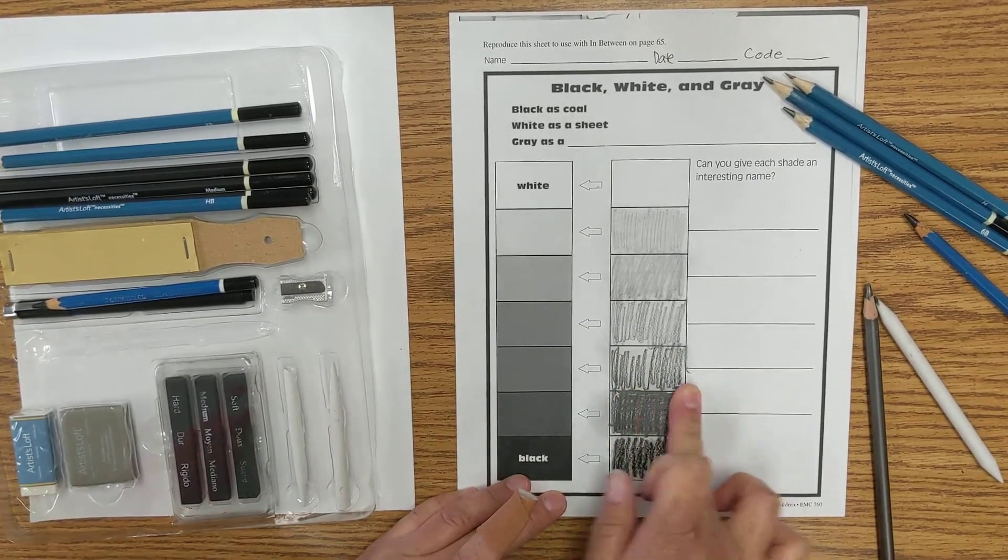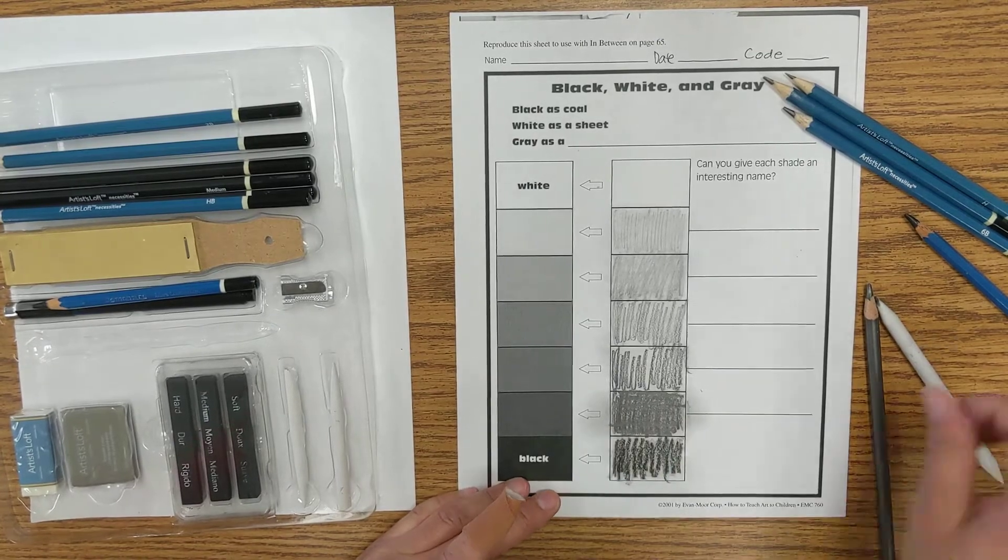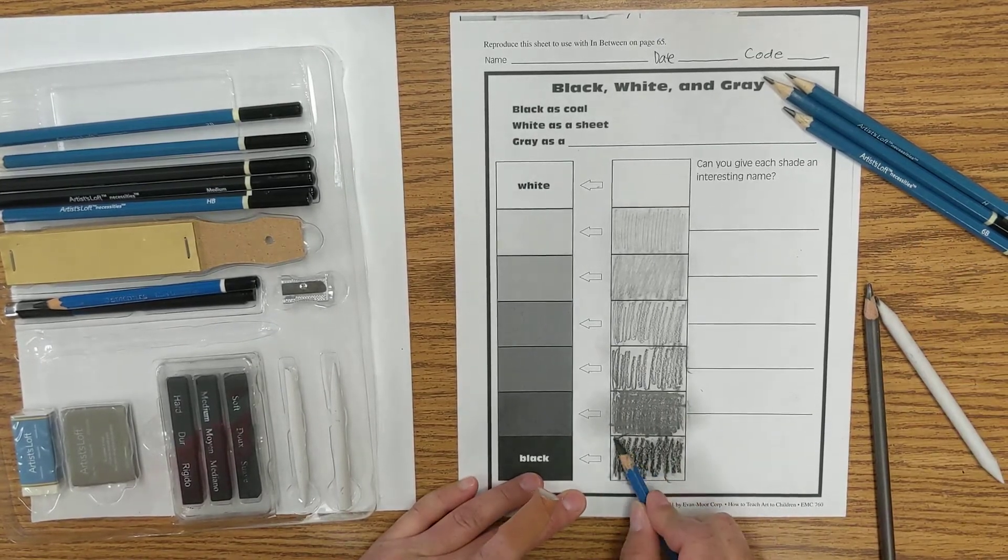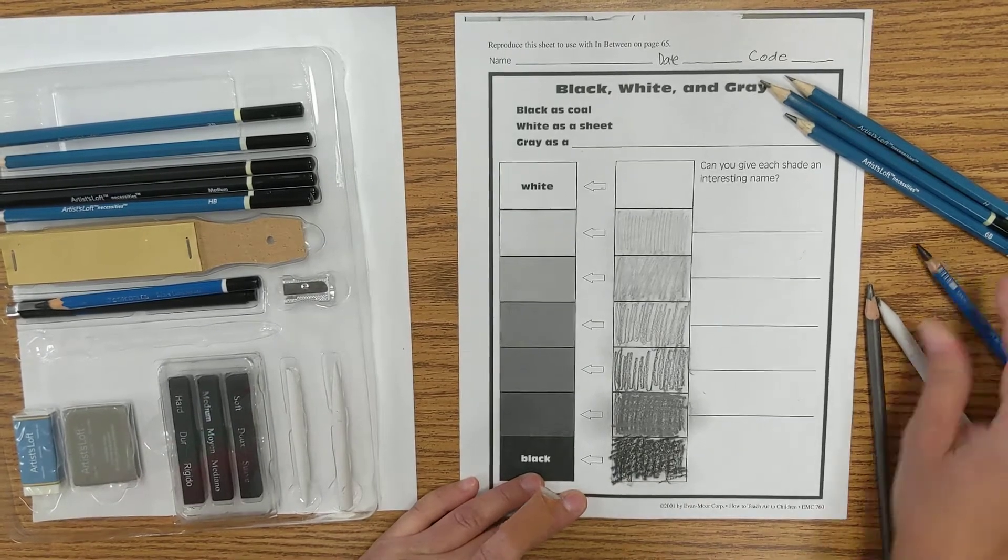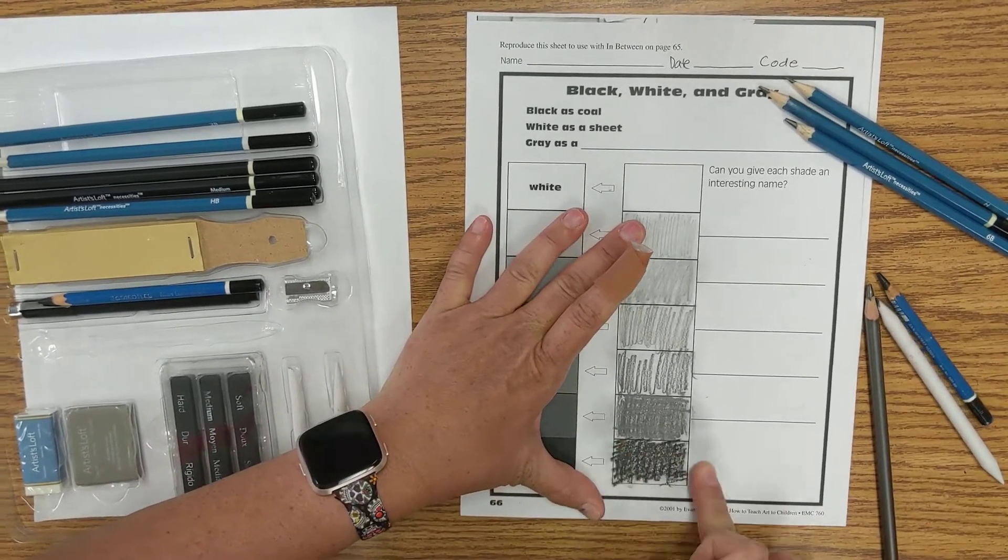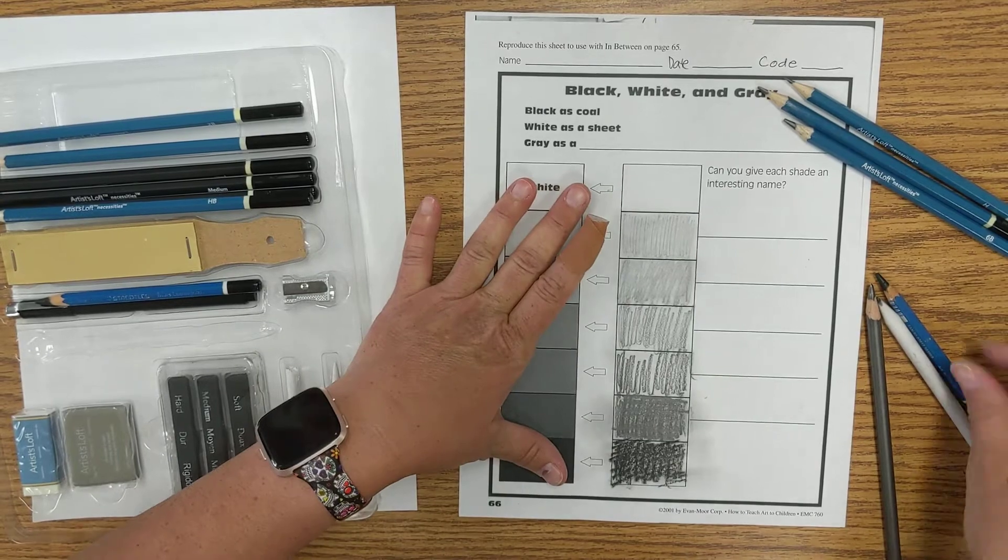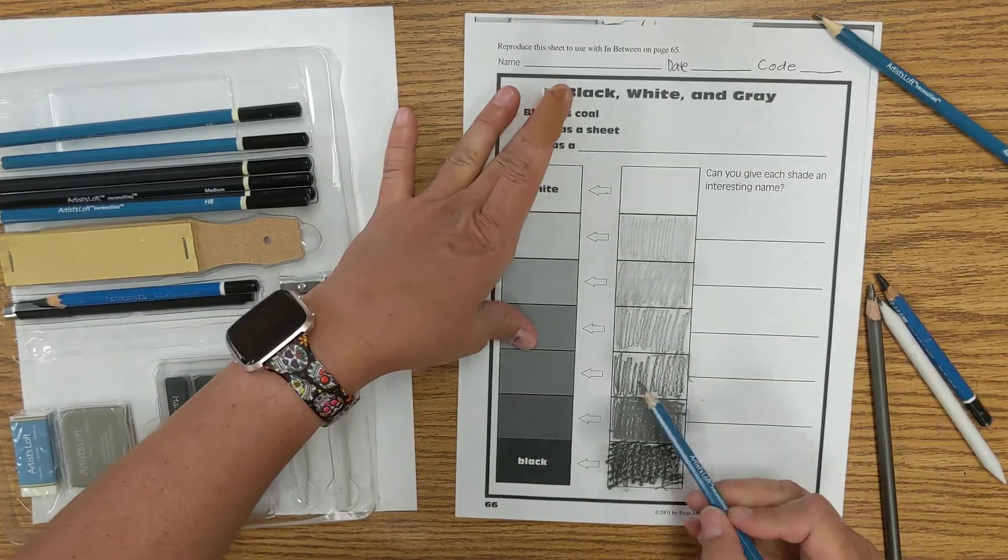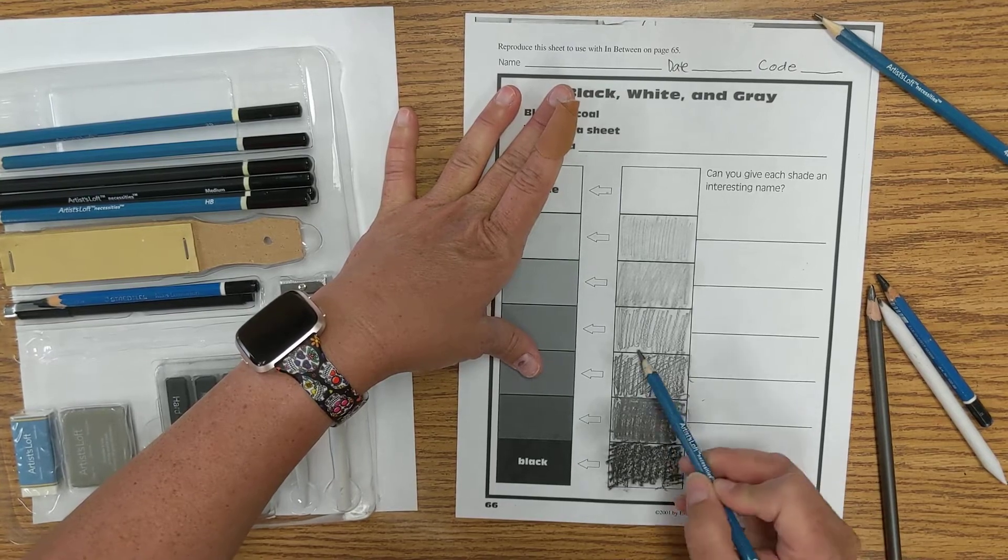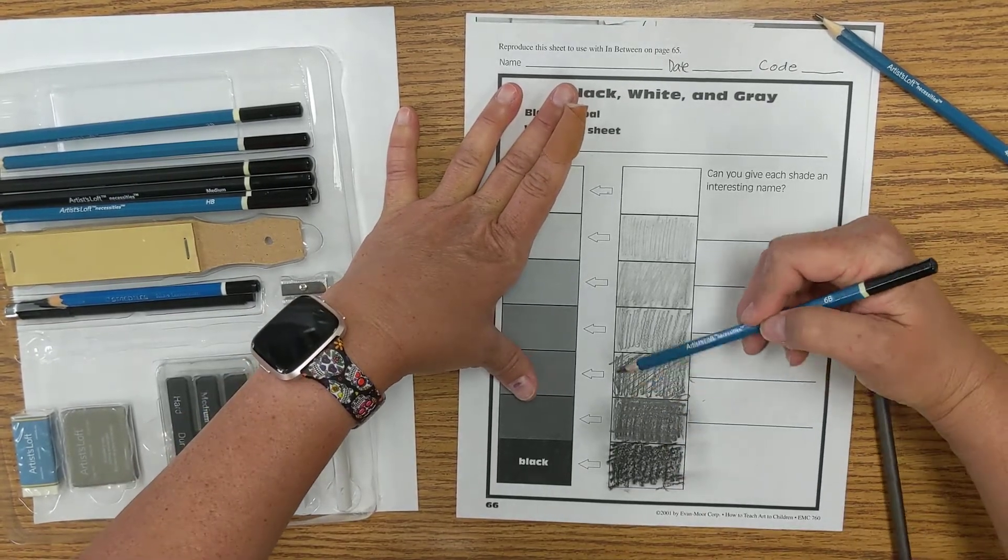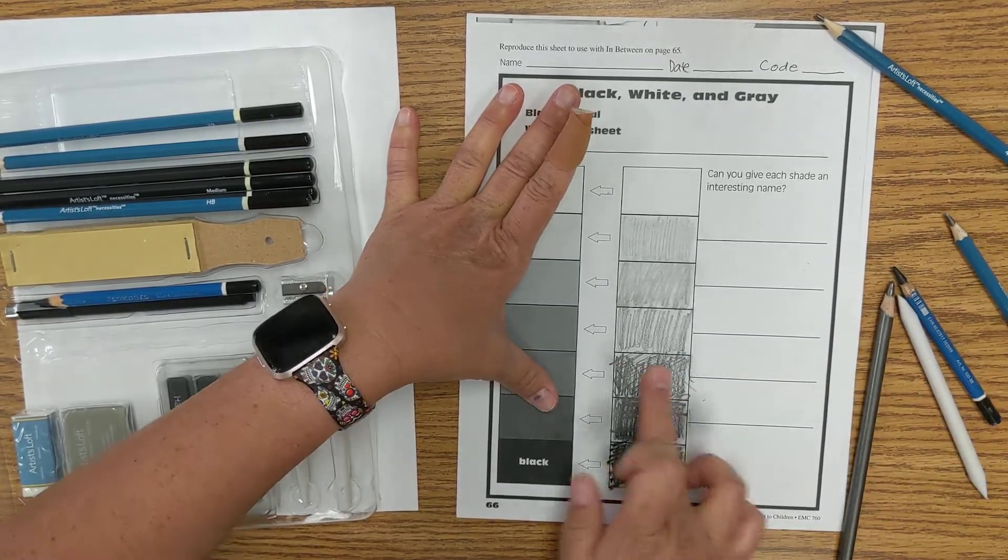Now if any of these are looking too dark, then you might want to use an eraser and erase out what you don't need. And it's okay to overlap a little bit. So I'm trying to get this as dark as I can, and then this one, this one here. Yeah, I'm cross-hatching it just to get more layers on there.